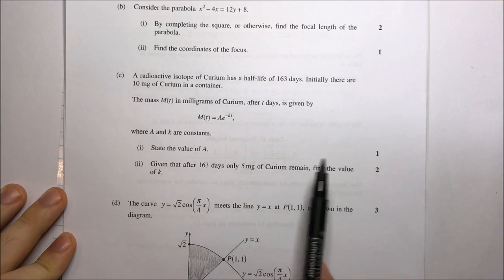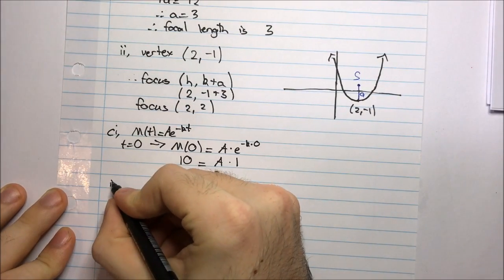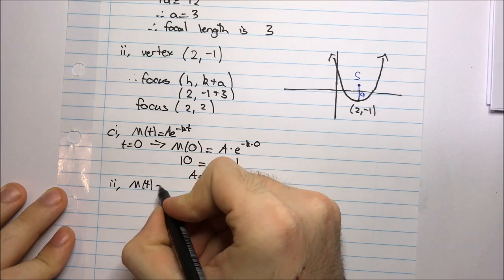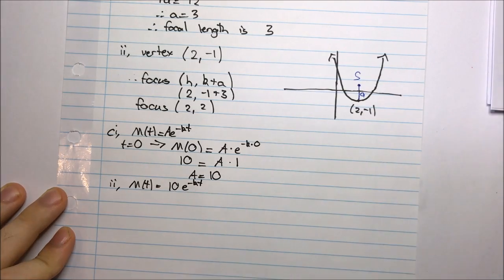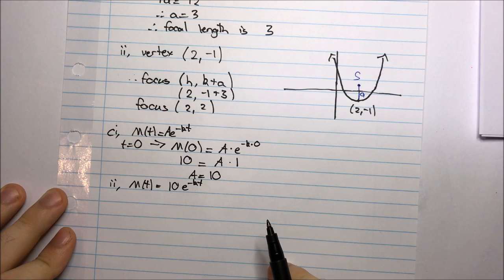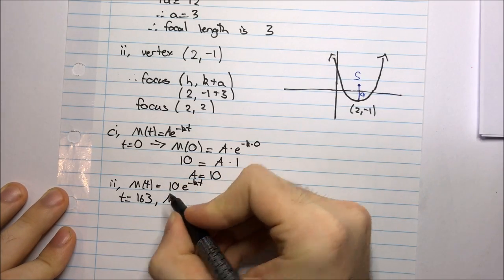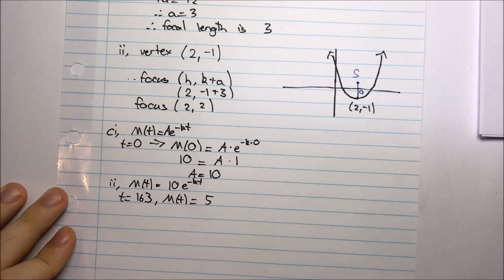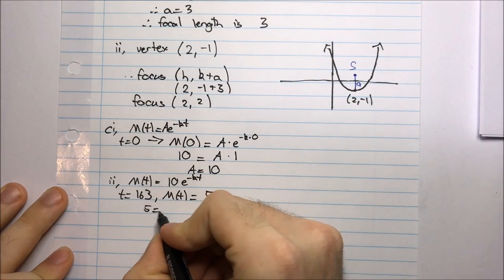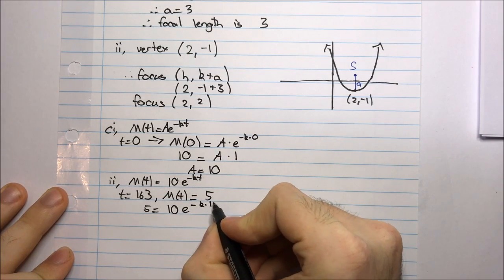Part ii — given that after 163 days only 5mg of curium remain, find the value of k. I can rewrite my function now — instead of a, I write 10: so 10e to the negative kt. It said that after 163 days only 5mg remain, so when t is 163, m(t) is 5. Plugging these in: 5 equals 10 times e to the power negative k times 163.